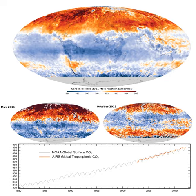Even if equilibrium is reached, including dissolution of carbonate minerals, the increased concentration of bicarbonate and decreased or unchanged concentration of carbonate ion will give rise to a higher concentration of unionized carbonic acid and dissolved CO2. This, along with higher temperatures, would mean a higher equilibrium concentration of CO2 in the air.